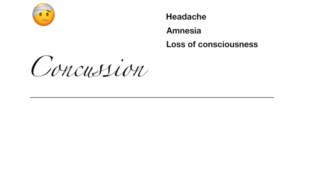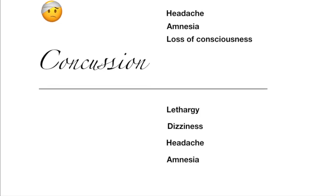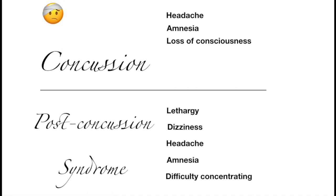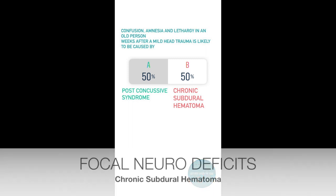Days to weeks after a concussion, patients might experience lethargy, dizziness, headache, amnesia, etc. They might also complain of difficulty concentrating and multitasking. This is known as post-concussive syndrome. Chronic subdural hematoma is also a possibility in older people with mild head trauma. However, a chronic subdural hematoma will also have symptoms of focal neurological deficits like hemiparesis or aphasia due to the effect of the hematoma on brain tissues.